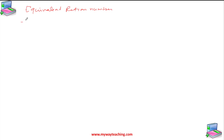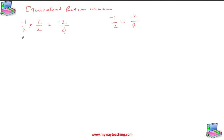We know this is a rational number. If we multiply by 2/2 — that means multiply the numerator and denominator by 2 — then it gives minus 2 by 4. So this is an equivalent rational number. If you multiply by 3/3, then it also gives an equivalent rational number, and we can write minus 3 by 6.